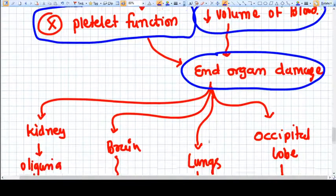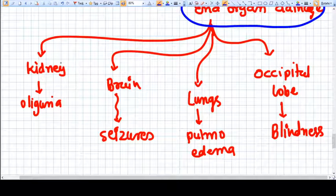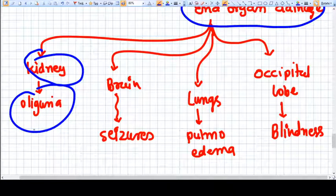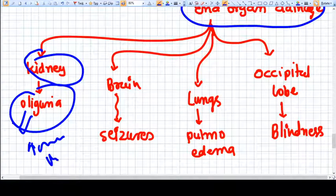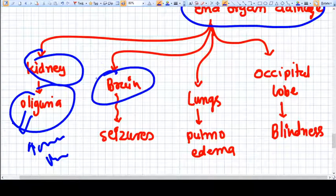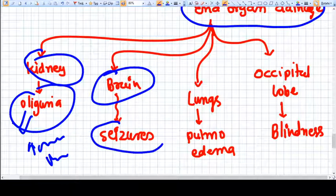These are the end organs. So if the blood volume is not reaching the kidney, it will go into failure and oliguria will be there. Increase in the creatinine and urea will be there. If the blood supply of the brain is hampered, then it can cause seizures, which is called eclampsia.